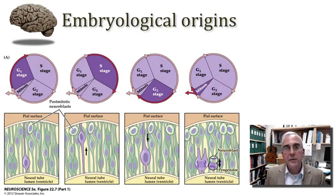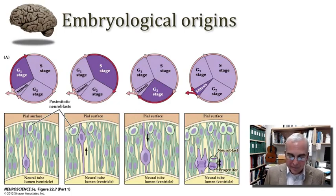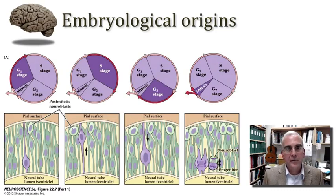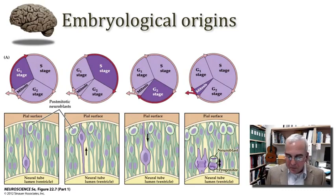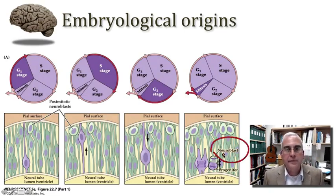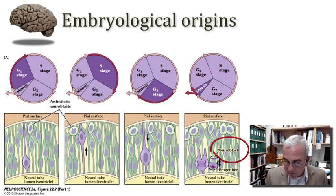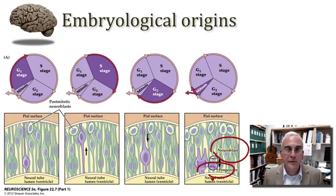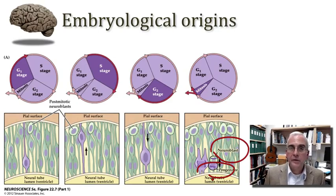Proliferation happens in a region very close to the ventricles — very close to the lumen of the developing neural tube. As the cell cycle proceeds, nuclei divide and DNA is replicated in different zones within the wall of the neural tube. Eventually, cells exit the cell cycle and become what we call neuroblasts. These neuroblasts go on to differentiate into neurons and glia, while a progenitor cell is left behind that can continue to divide, or perhaps differentiate into a stem cell that may remain competent to re-enter the cell cycle at some later point across the lifespan.